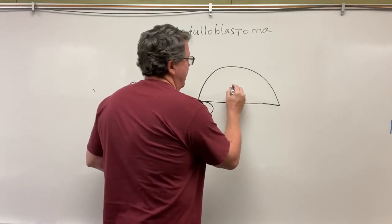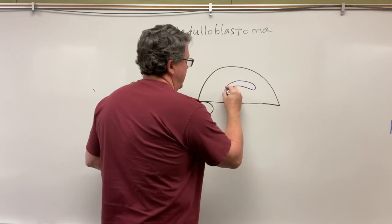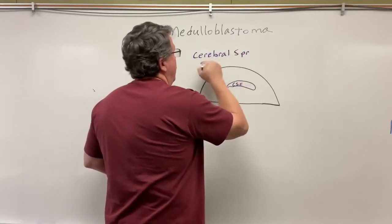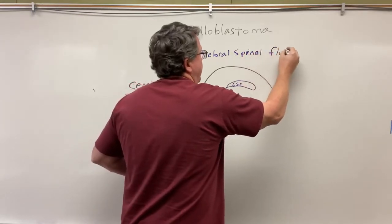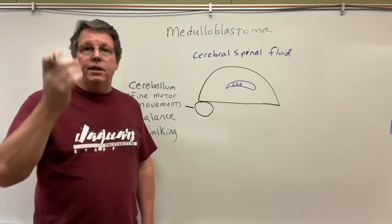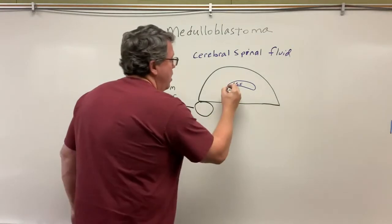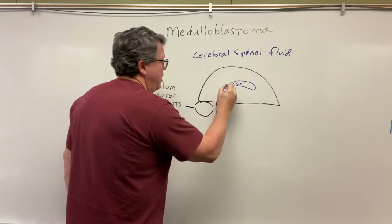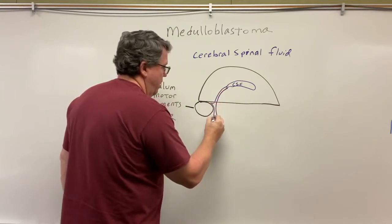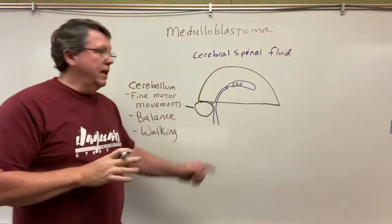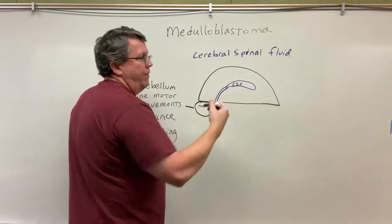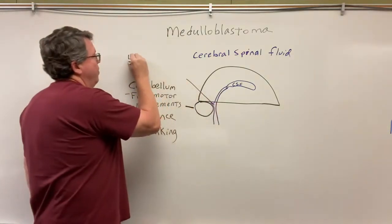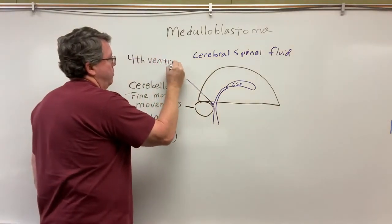In the cerebrum, you have what we call ventricles, and the ventricles produce cerebral spinal fluid. Cerebral spinal fluid nourishes and provides lubrication to the meninges. The CSF is made in the brain — though it can also be made in the spinal cord — and it drains down through different areas: the lateral ventricles, the third ventricle, the cerebellar aqueduct, and then what we're going to call the fourth ventricle.